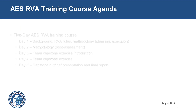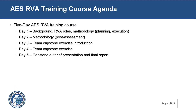The AES RVA is a five-day course. Here's the agenda. Day one: background, RVA roles, methodology, planning, execution. Day two: methodology, post-assessment. Day three: team capstone exercise introduction. Day four: team capstone exercise. Day five: capstone out brief presentation and final report.